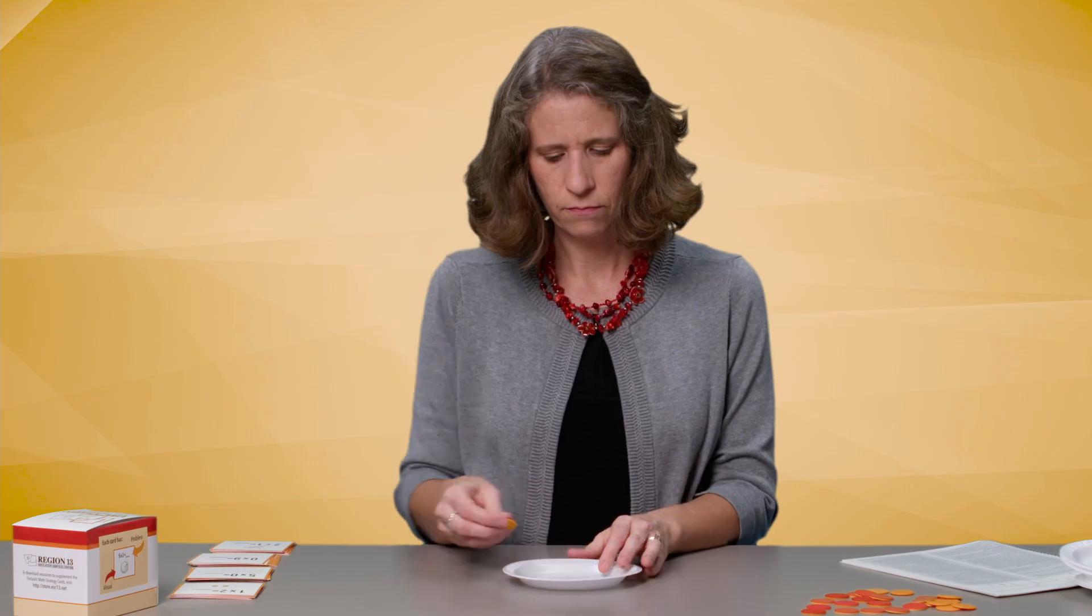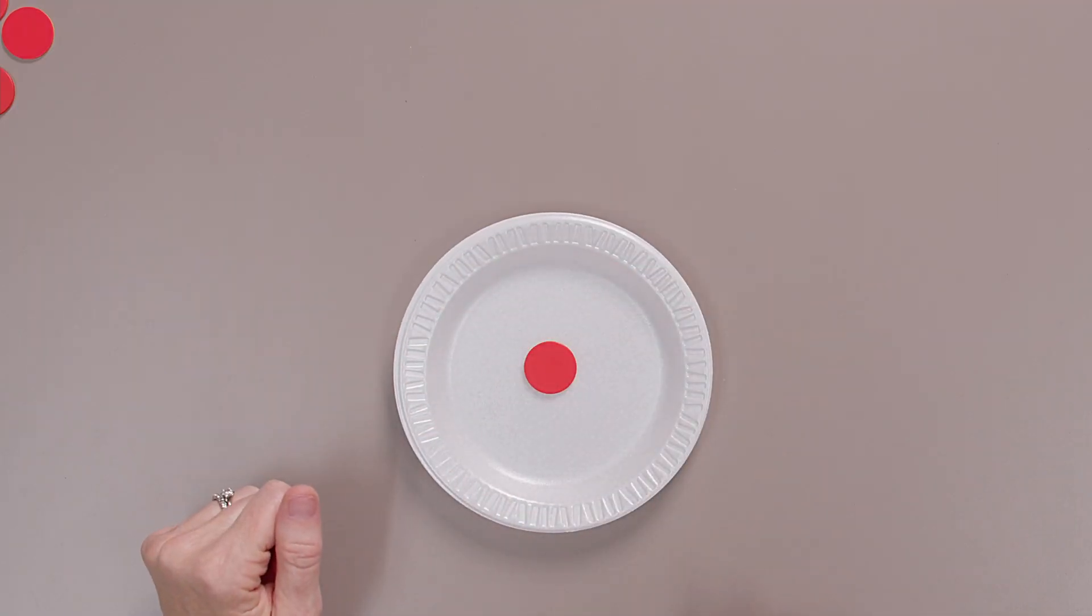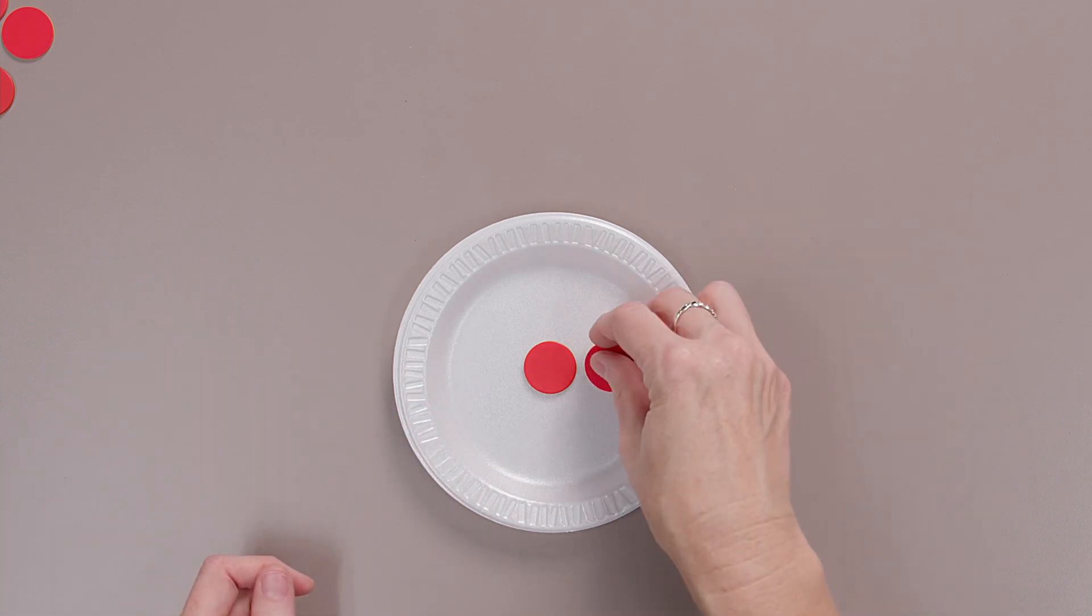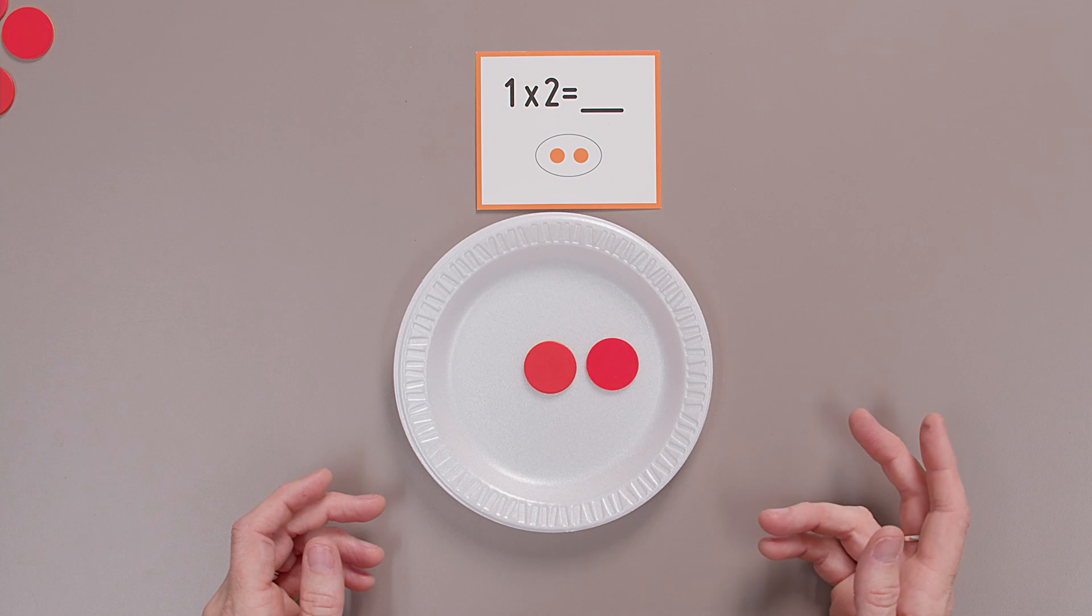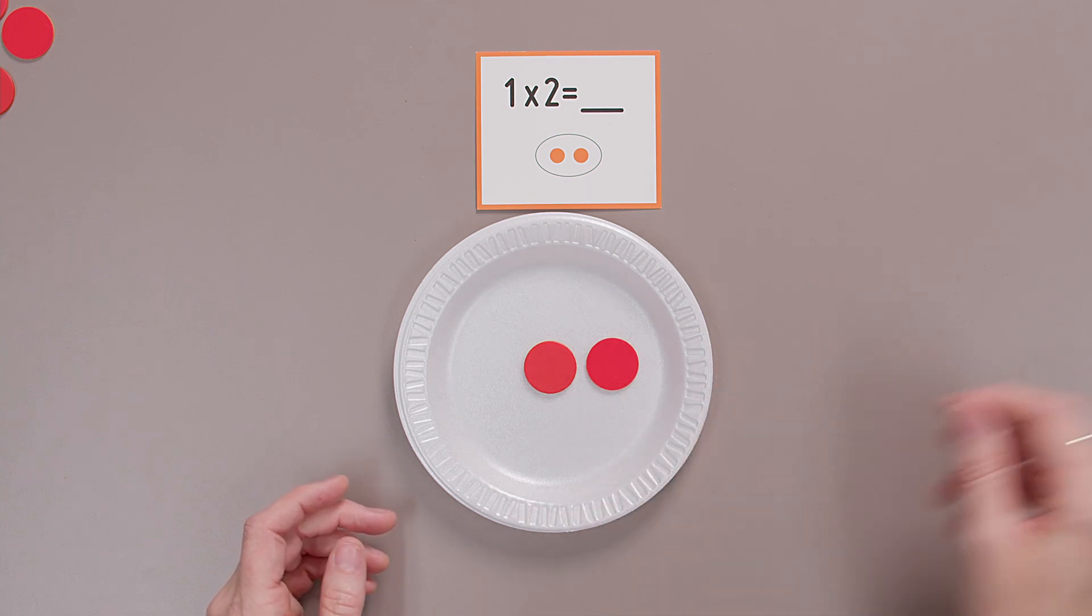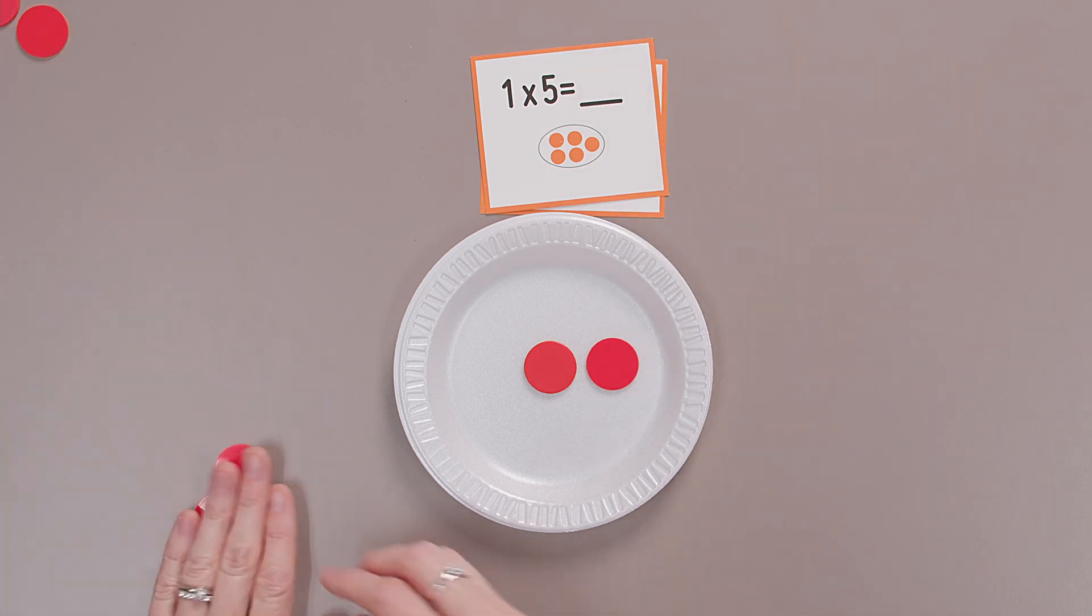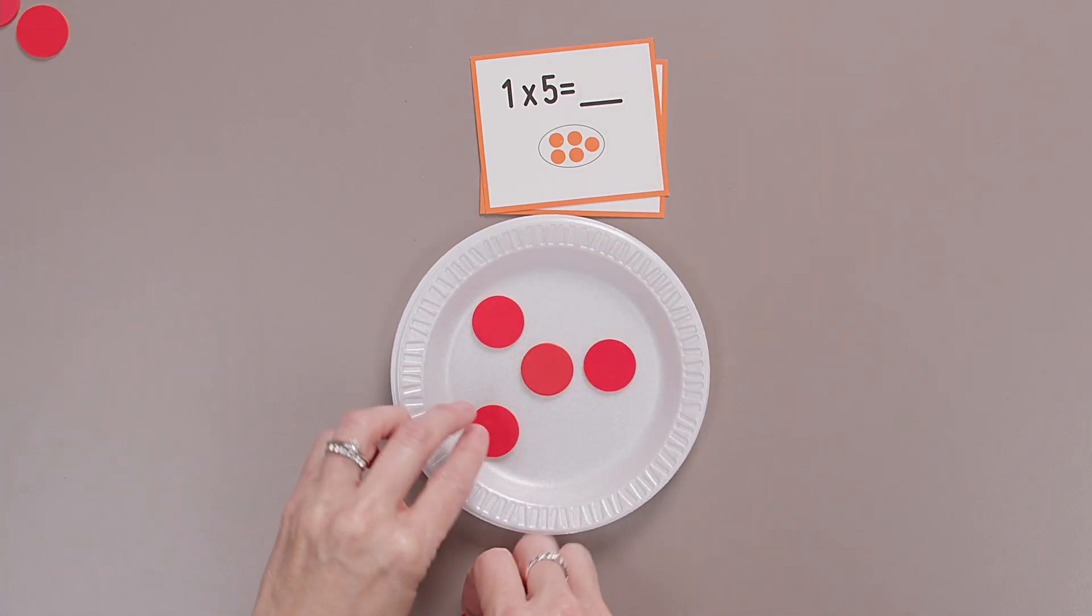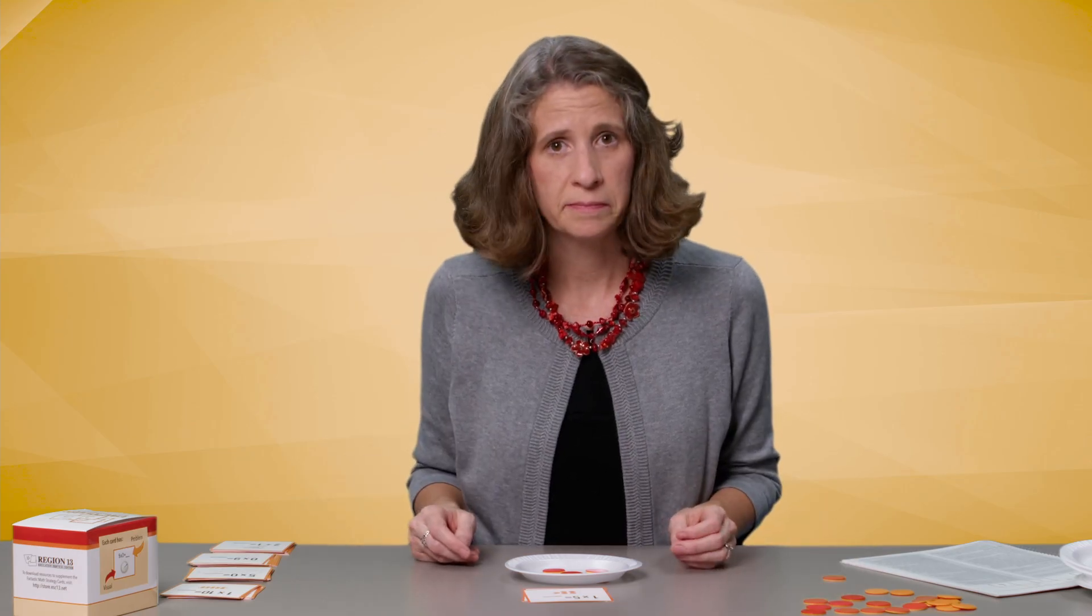So I have one plate, one group with one counter. It's one, right? One group, one counter is one. One group of two is one times two. One times two is two. I have one group of two. Simple enough. One group of five. Okay, one group with five counters. Five. One group of five is five. Excellent.